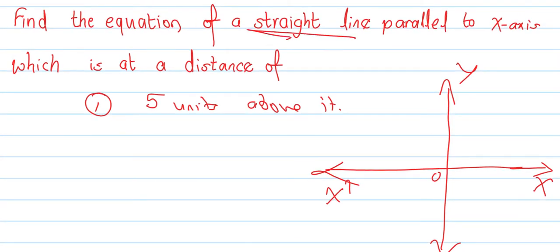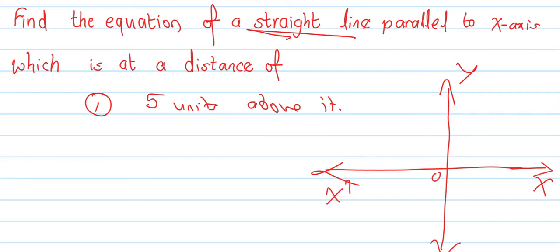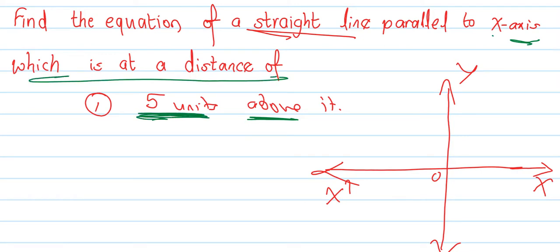Find the equation of a straight line parallel to the x-axis. This is the line parallel to the x-axis, which is at a distance of 5 units above it.